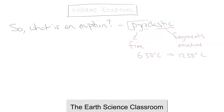Gases can come out at the same kind of temperature. Superheated material can come out, and it will cool quickly when it enters the atmosphere, as the atmosphere is a lot colder than the interior of the Earth.